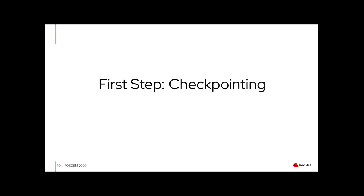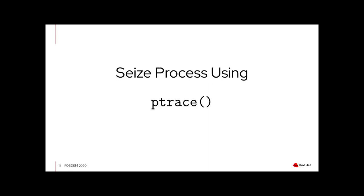I want to give you some details about CRIU and how it works. The first step is checkpointing your processes. You have a container with multiple processes running inside it, and you tell CRIU you want to checkpoint this container. You give it the PID of the first process and it will stop and collect the information of all processes in the process tree. All child processes are always checkpointed together with the first process. One way CRIU does this is using ptrace to stop the process; there's also the cgroup freezer approach.